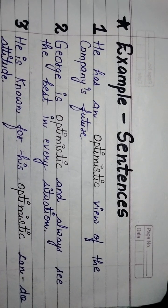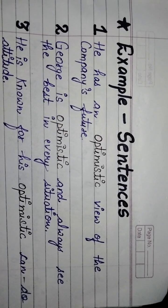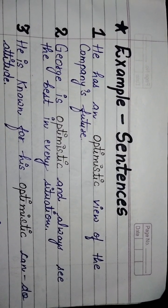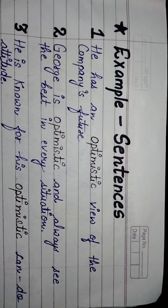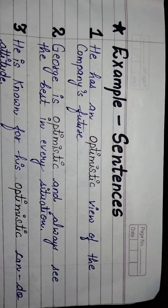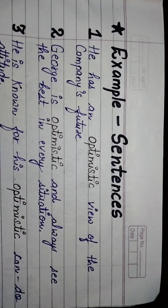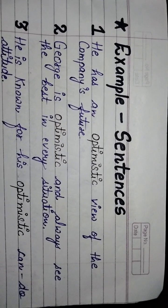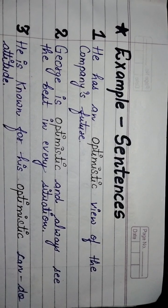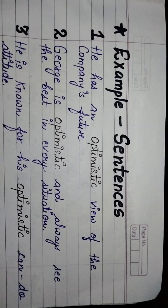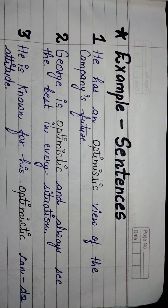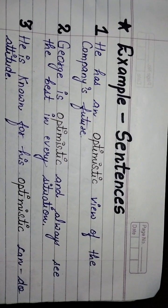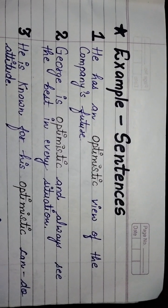Now let's talk about the example sentences of optimistic. Sentence number one: 'He has an optimistic view of the company's future.' यानि कि वो company के future के बारे में optimistic है — आशावादी है, positive है. वो ये सोचता है कि company का भविष्य बहुत अच्छा और profitable होगा. तो इस तरीके से वो अपनी company के future को लेके optimistic है कि जो भी होगा, बहुत अच्छा और profitable रहेगा.